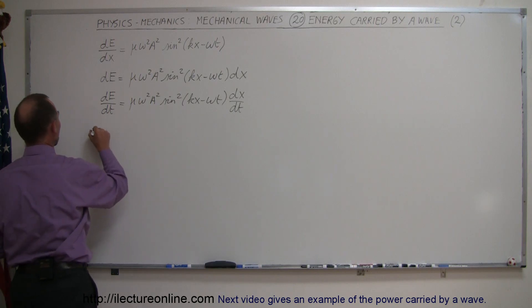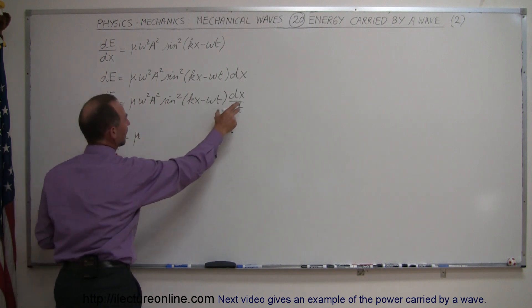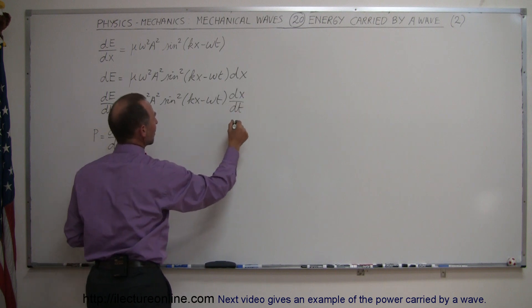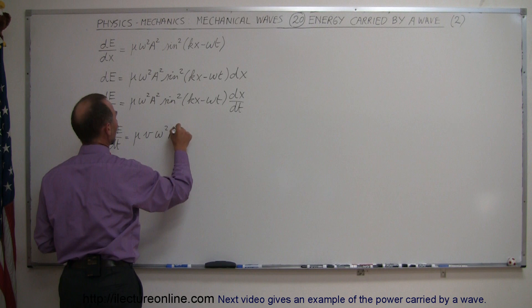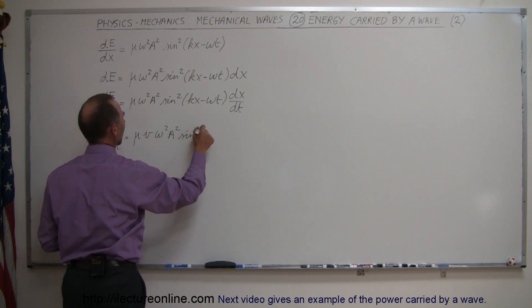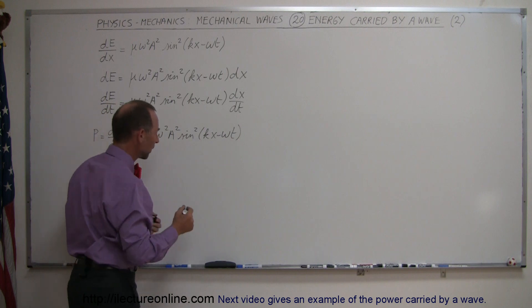So we can say that the power transported on the wave is equal to dE/dt, which is equal to mu sub-naught, and dx/dt is going to be a v, that's the velocity, velocity times omega squared a squared times the sine squared of Kx minus omega t.